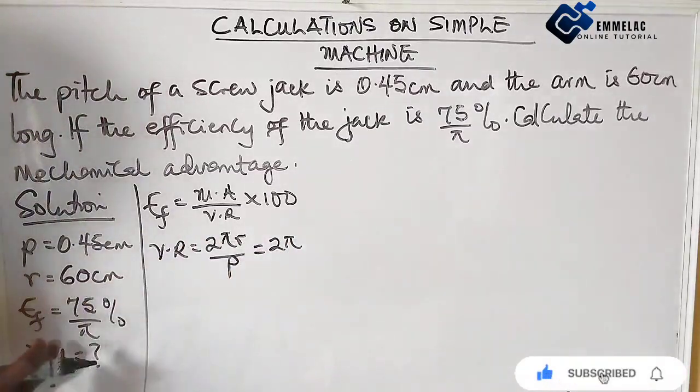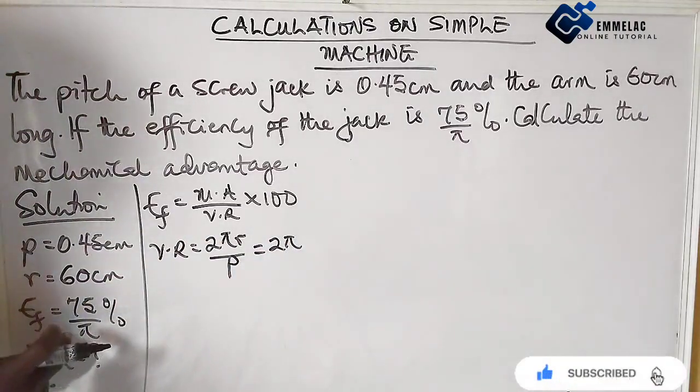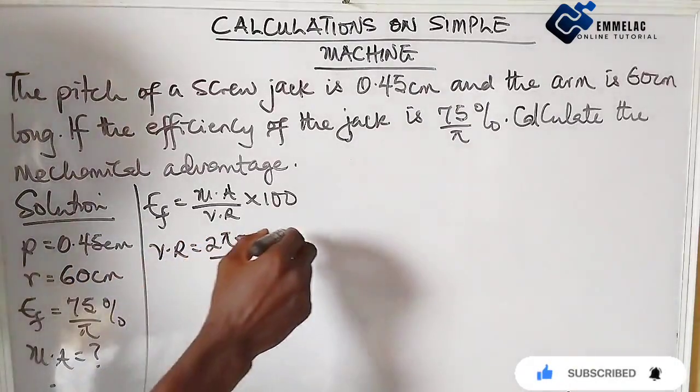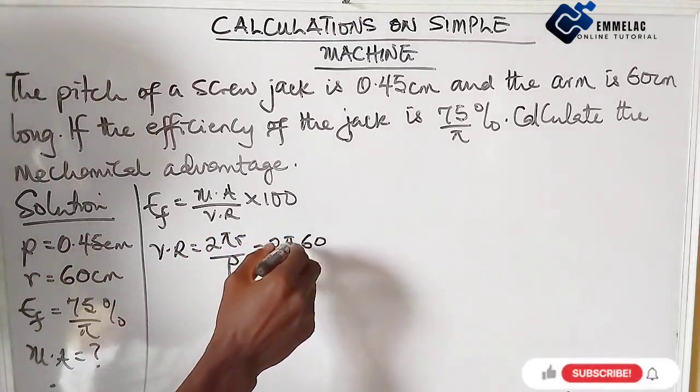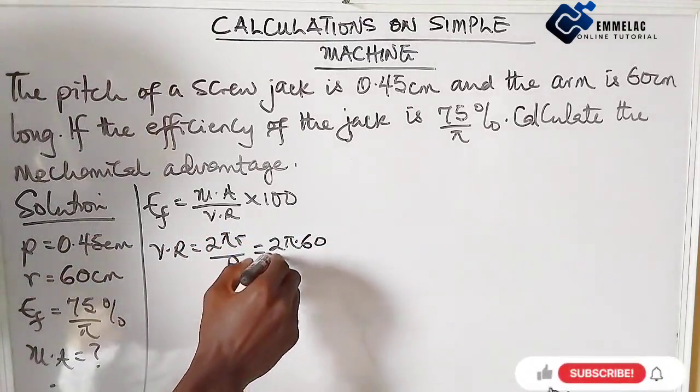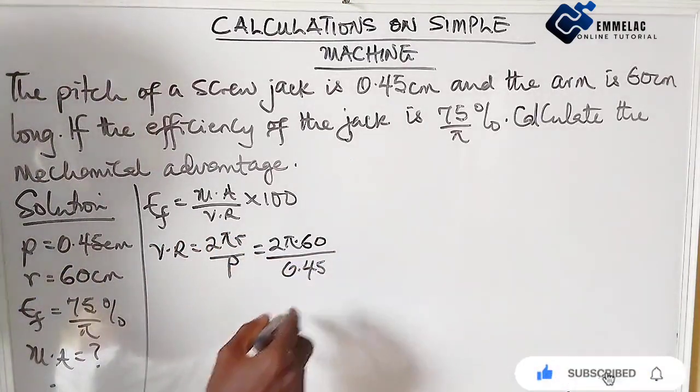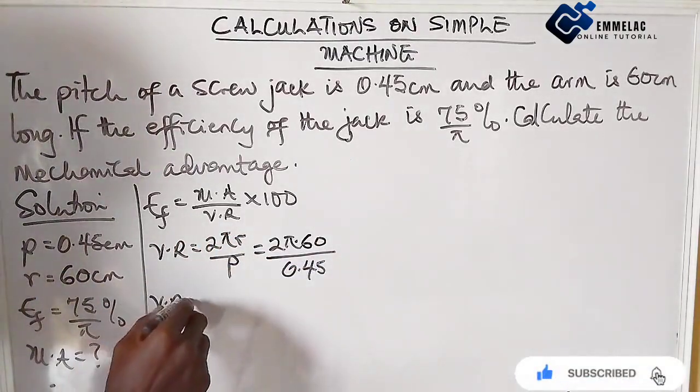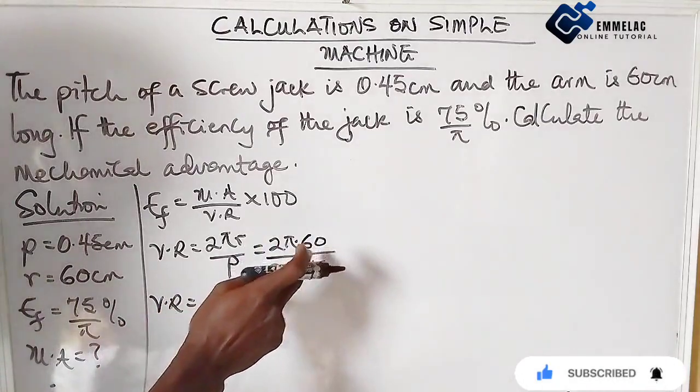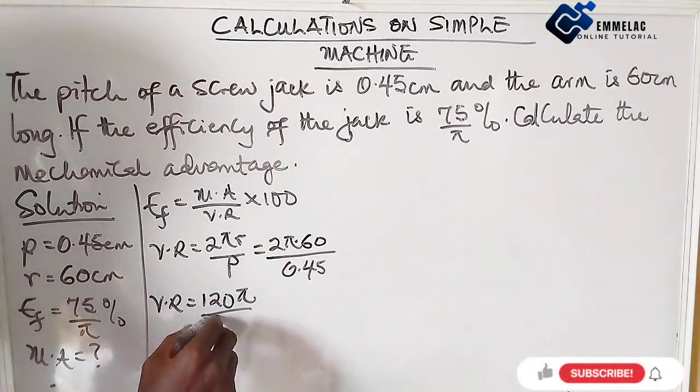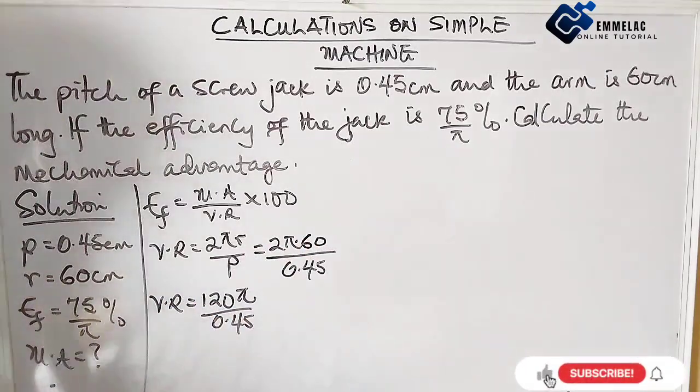Let us leave this π because we probably need it to cancel out. Now times the radius is 60, so this is times 60 over 0.45. So our velocity ratio will now be 2 times 60, which gives us 120π over 0.45.